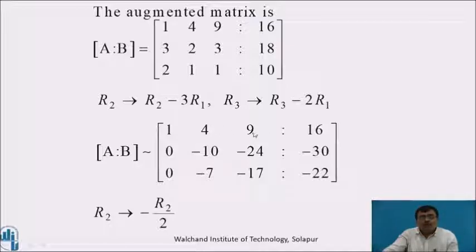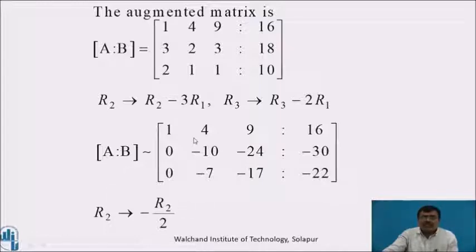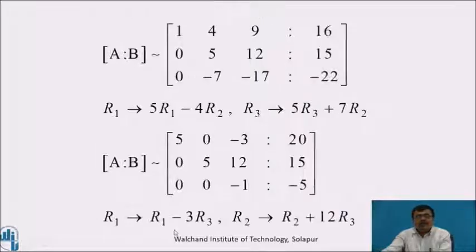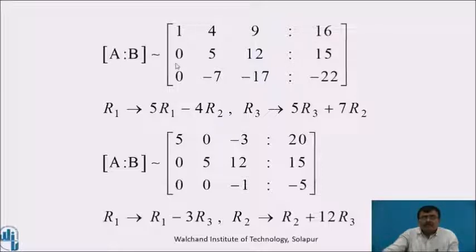The augmented matrix AB becomes equivalent to [1, 4, 9, 16; 0, −10, −24, −30; 0, −7, −17, −22]. For convenience, to get the smallest integer, apply R2 = −R2/2. This gives AB equivalent to [1, 4, 9, 16; 0, 5, 12, 15; 0, −7, −17, −22].